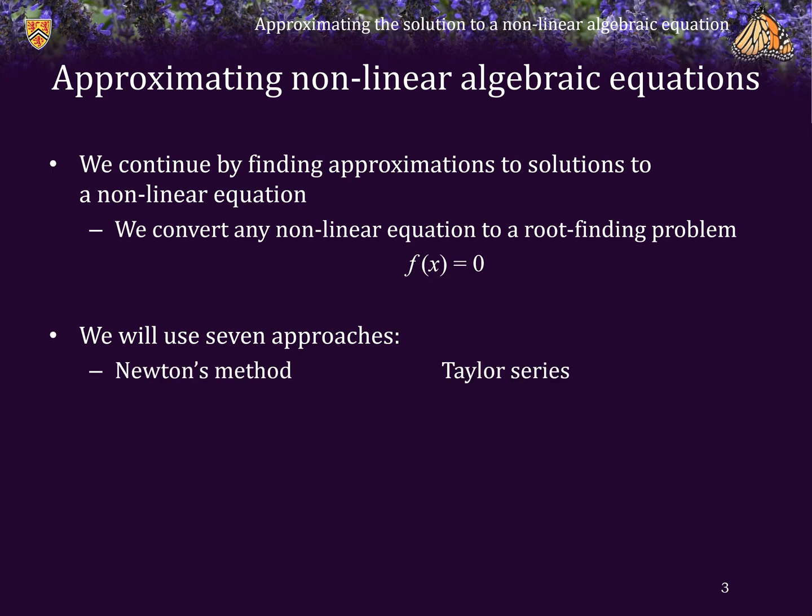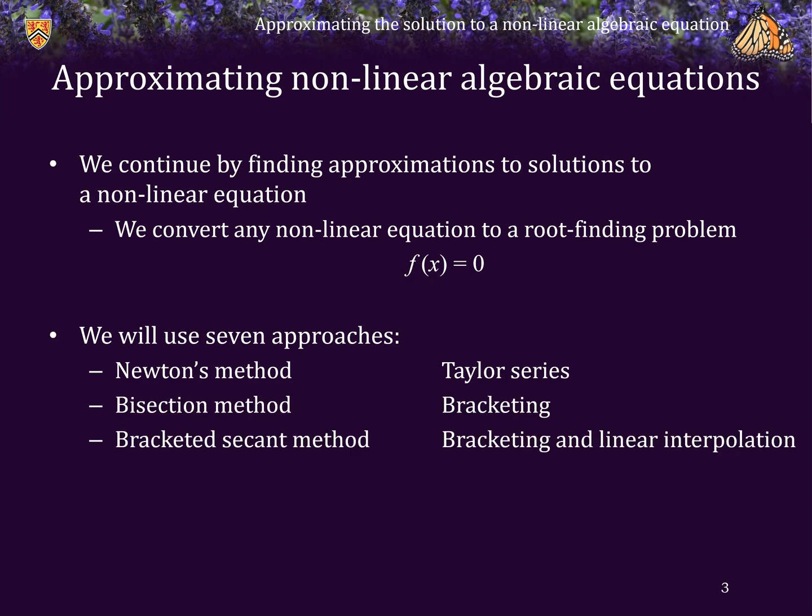We will use seven different approaches for approximating the roots of a non-linear function. First, we're going to look at Newton's method, which uses a Taylor series to approximate the root. Then there's the bisection method, which is bracketing. The bracketed secant method uses bracketing and linear interpolation, while the secant method simply uses linear interpolation.